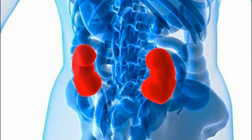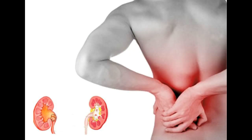Kidney stones often do not cause any symptoms. Usually, the first symptom of a kidney stone is extreme pain, which begins suddenly when a stone moves in the urinary tract and blocks the flow of urine. Typically, a person feels a sharp, cramping pain in the back and side in the area of the kidney or in the lower abdomen. Sometimes nausea and vomiting occur. Later, pain may spread to the groin. If the stone is too large to pass easily, pain continues as the muscles in the wall of the narrow ureter try to squeeze the stone into the bladder.